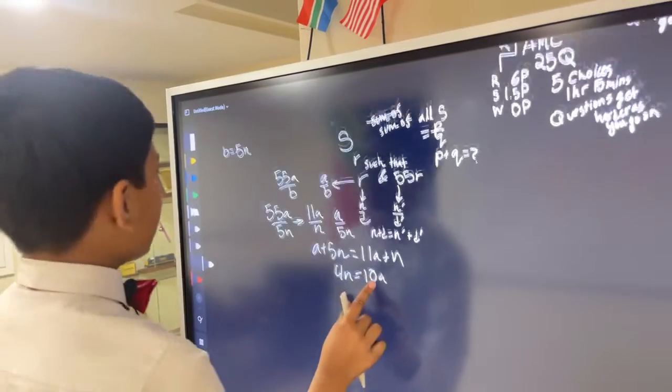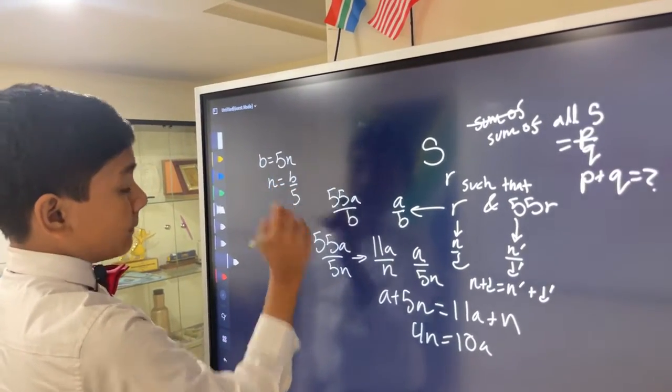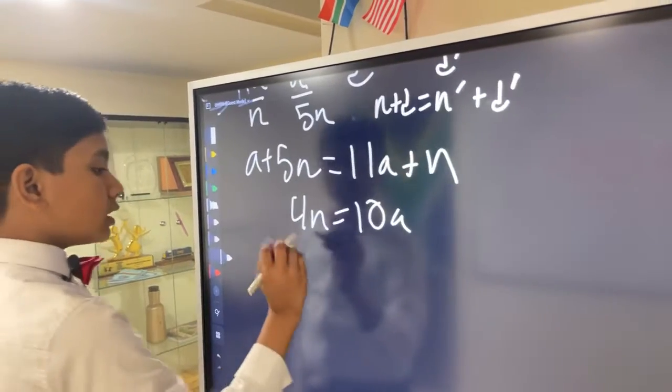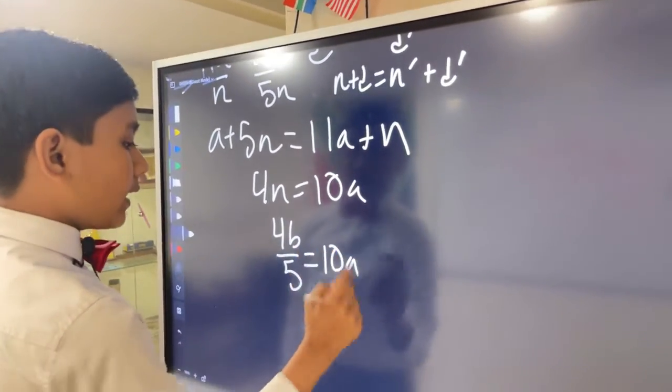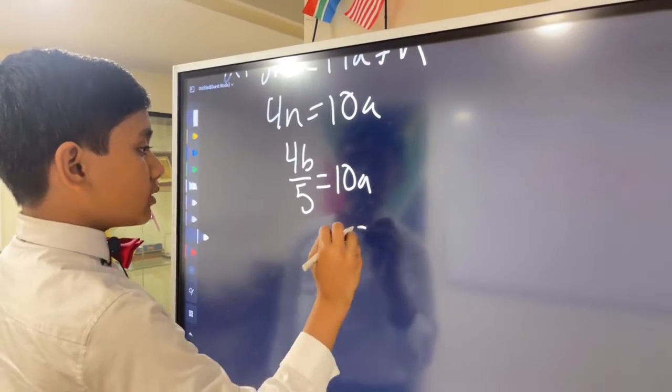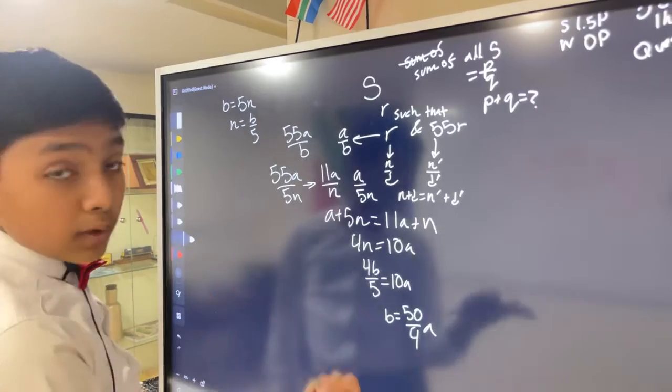So now we know B is 5N, so N is B fifths, B over 5. So we have 4B over 5 equals 10A. So B is equal to 50 over 4A. Alright, so that's one possibility.